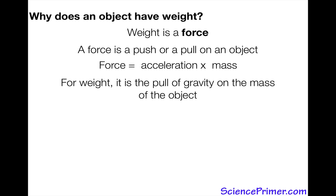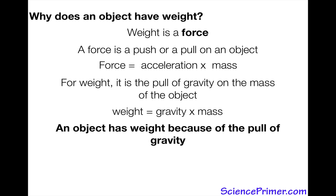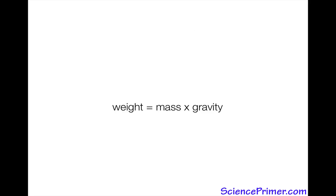For weight, the acceleration is the pull of gravity acting on the mass. So we can rewrite force equals acceleration times mass to: weight (the force weight) equals acceleration due to gravity times the mass. So an object has weight because of the pull of gravity acting on its mass.